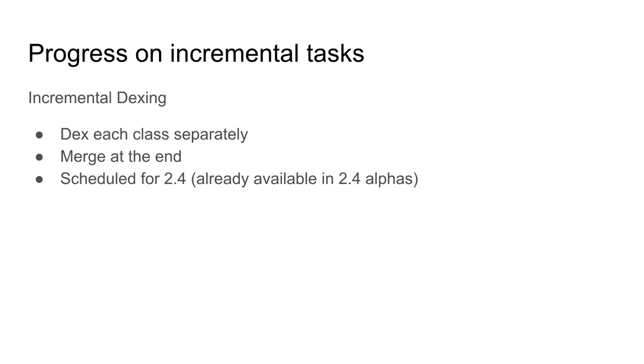Incremental dexing: right now we dex an entire module as one unit. In 2.4, we're starting to have incremental dexing — we'll dex on a per-class basis, only re-dex the class that changed, and then dex-merge everything at the end. It should go live and stable in 2.4, and is already available in the 2.4 alphas. We're seeing good performance improvement there.